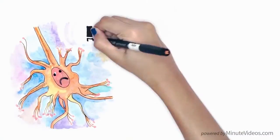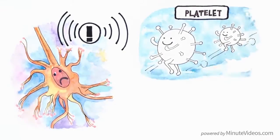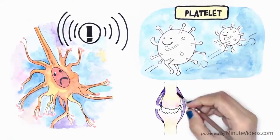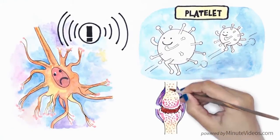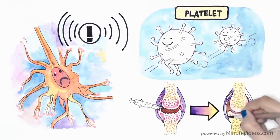Injured cells send off distress signals attracting the activated platelets brought in through PRP. The newly arrived growth factors now motivate the healthy cells to multiply and replace the injured or dead cells. The healing process is in full gear.